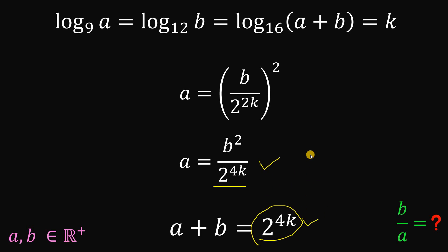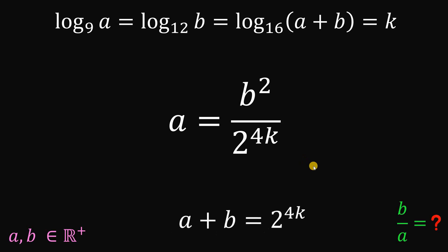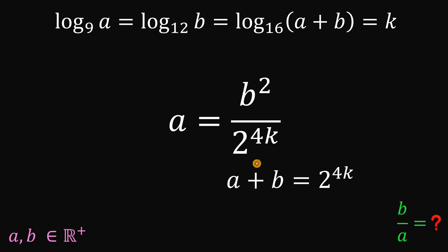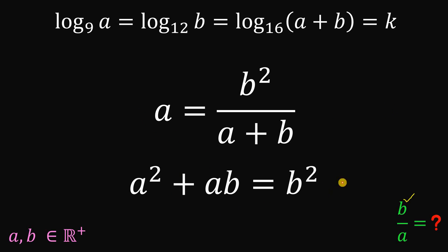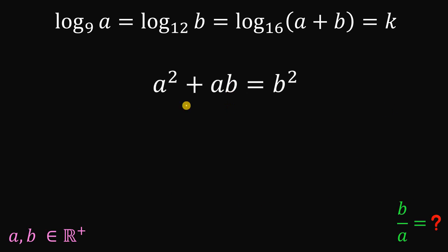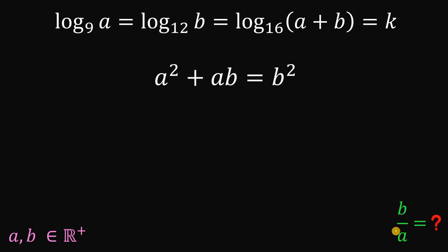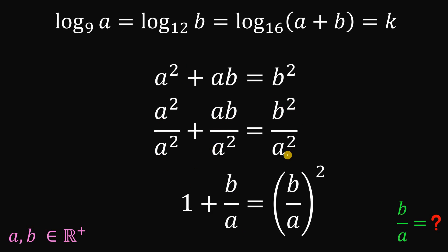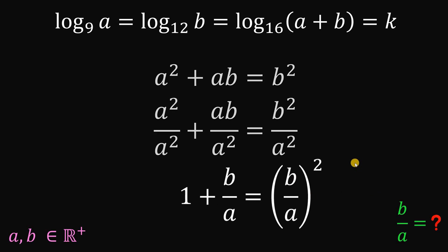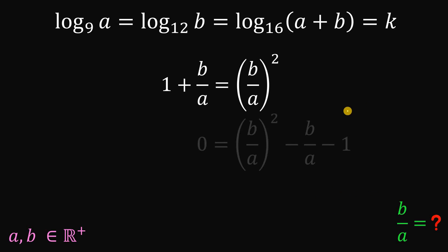Therefore, let's focus on these two results. Take note that 2 raised to the power of 4k is equivalent to A plus B, so we can replace it with A plus B. From here, we can now find the value of B over A. Multiplying both sides by A plus B gives us A squared plus AB equals B squared. Now, dividing all terms by A squared: A squared over A squared is 1, AB over A squared is B over A, and B squared over A squared is B over A raised to the power of 2. Setting this equal to zero gives a quadratic equation in terms of B over A.